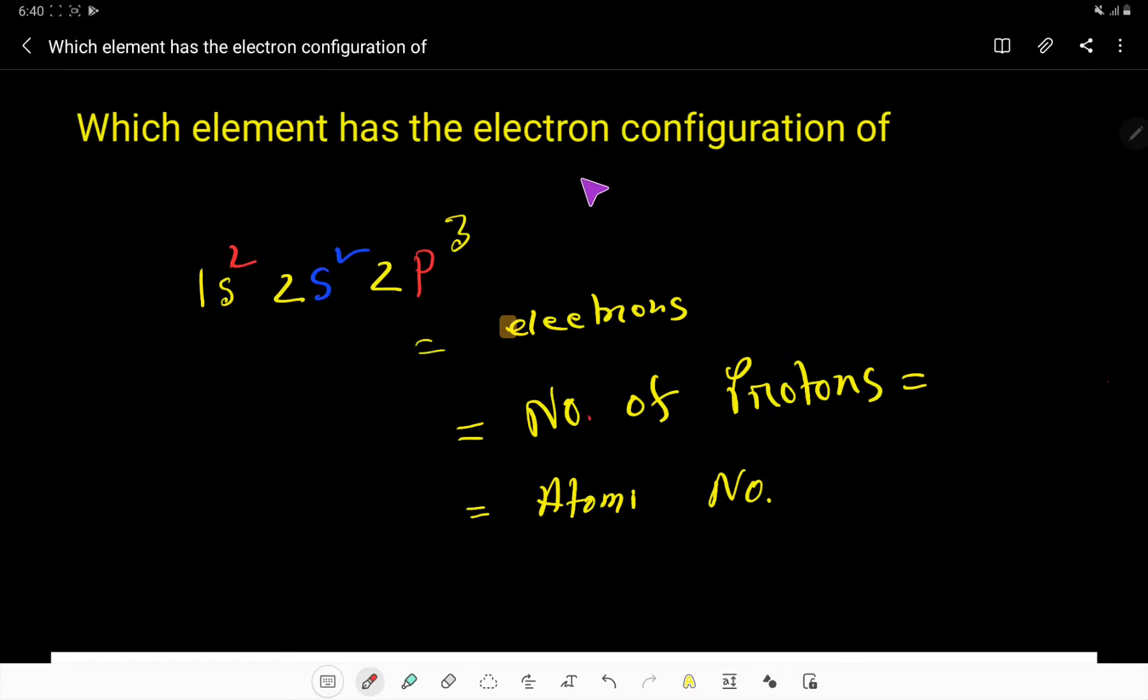Which element has the electron configuration of 1s² 2s² and 2p³? To find out the name of this element, we have to count the number of electrons present here. We have two electrons, then two, and then three. So basically we are getting 2 plus 2 equals 4, plus 3 equals 7 electrons.